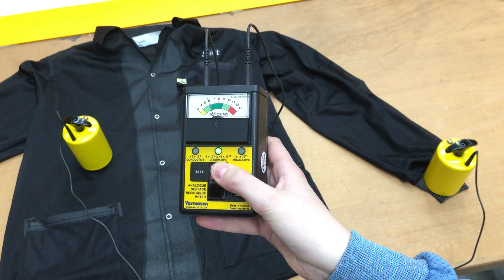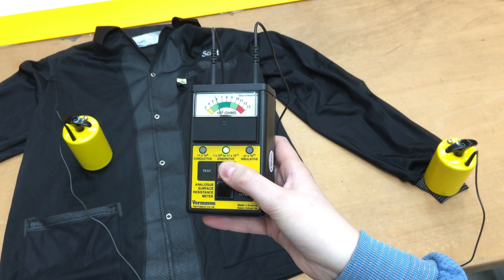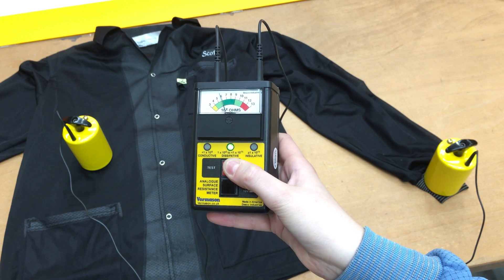The analogue surface resistance meter can be used to measure other materials used in the EPA, such as conductive or dissipative flooring, ESD-safe garments, shelving, seating and more.